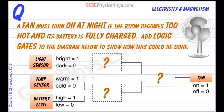In this flashcard we need to design a simple logic circuit that means that a fan will switch on at night if the room becomes too hot and its battery is fully charged. So we've got three input signals and the way to think about this is to identify the input signals, whether they're high or low, that we need in order to get the outcome we want.